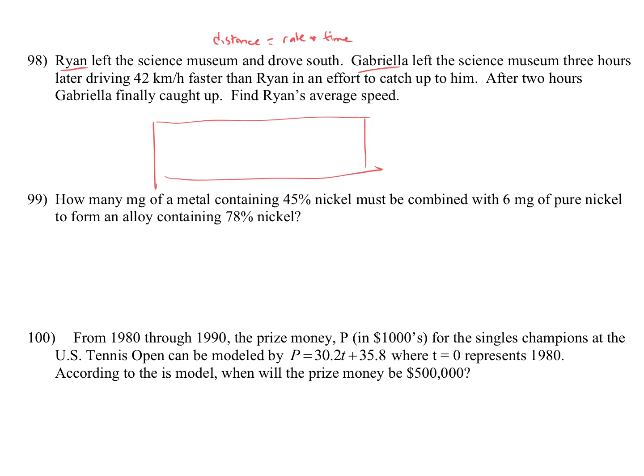So I'm going to write a chart here and I'm going to have stuff for Ryan and stuff for Gabriella. Since we have distances, rates, and times, I'm going to write D, R, and T. Then I'm going to read through the problem and see what I need to find. The first thing I notice is find Ryan's average speed, so we want his speed, that's his rate. I'm going to write x as Ryan's rate and I'm going to be trying to solve for x.